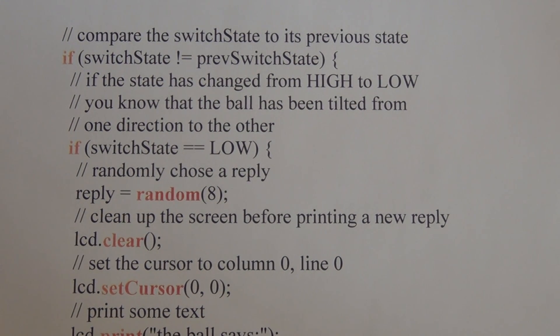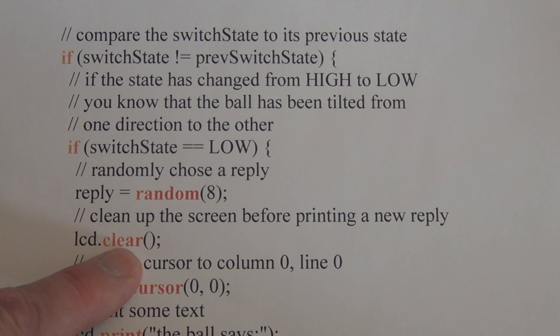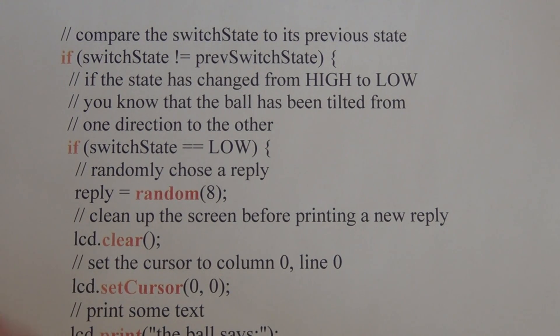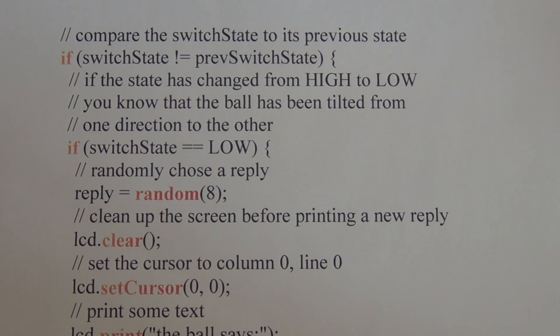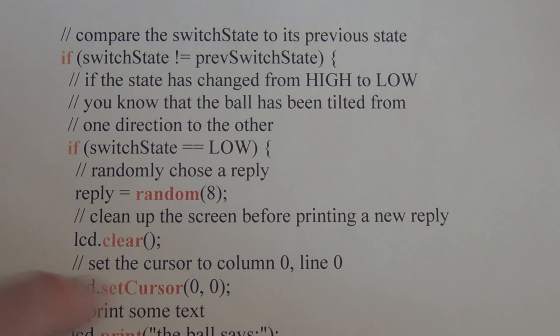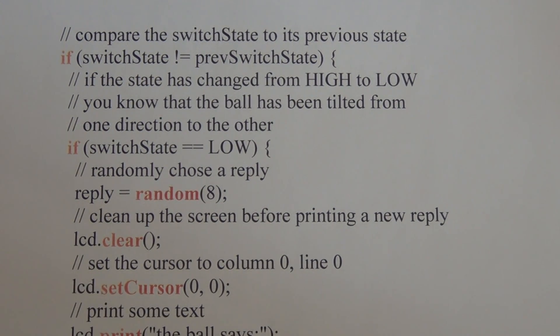So we have the initial two lines of text that we have to clear. We have to clear the ask the crystal ball and we use lcd.clear to do that. And then we have to reposition the cursor. So we have lcd.setCursor 0,0 and we're ready to print. lcd.print the ball says. And then we move the cursor to position 0,1, which is the first column, second row. And that sets the cursor up for the random reply.